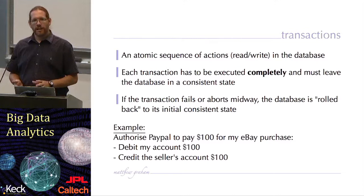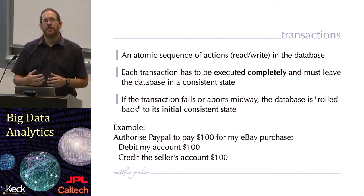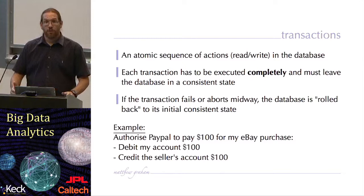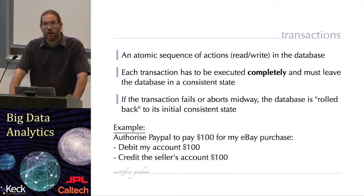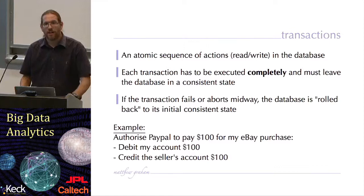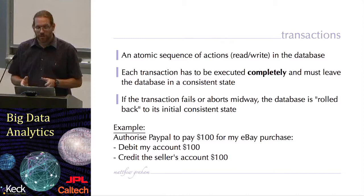There are a number of features of a relational database that I want to talk about. First of all, things that a relational database gives you that are very useful for the management and administration of data. One of the most important is the notion of a transaction. A transaction is an atomic sequence of actions, whether it's read or write, in the database. Transactions must be executed completely by definition, and they must leave a database in a consistent state. You can't have a transaction which leaves the database in a dangerous state.